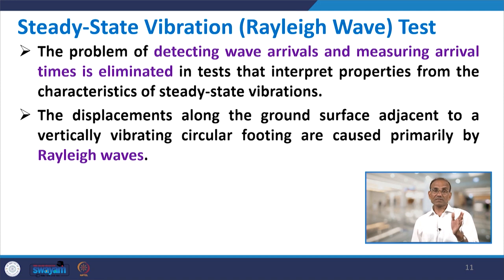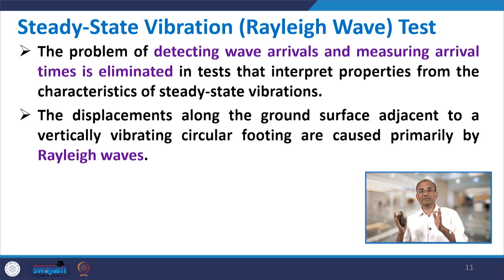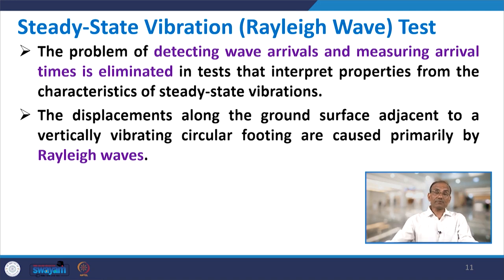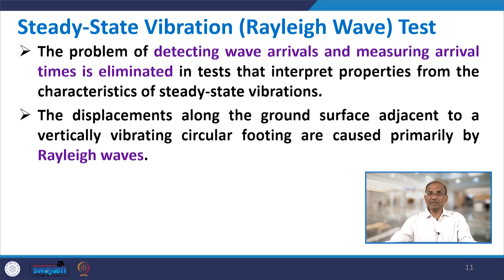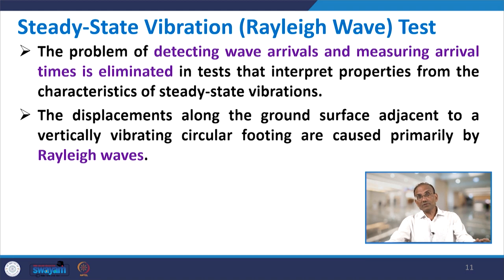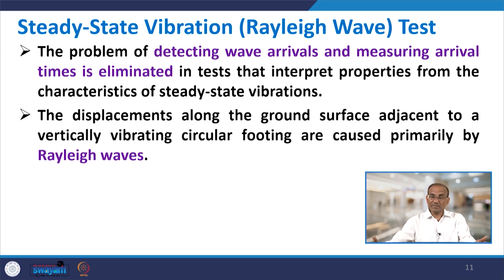Now the second test: steady state vibration, also called the Rayleigh wave test, because Rayleigh wave is a surface wave. The seismic refraction test was based on body waves, whether P waves or S waves. However, in steady state vibration we use surface waves, specifically Rayleigh waves. In this test the problem of detecting wave arrivals and measuring arrival times is eliminated. The displacement along the ground surface, adjacent to a vertically vibrating circular footing, is primarily caused by Rayleigh waves.